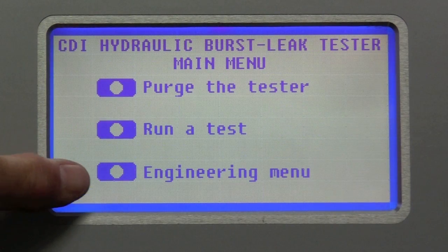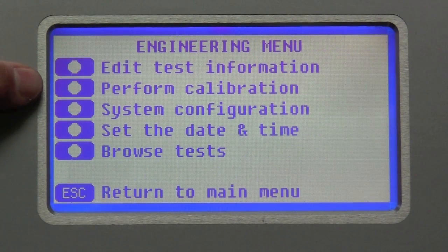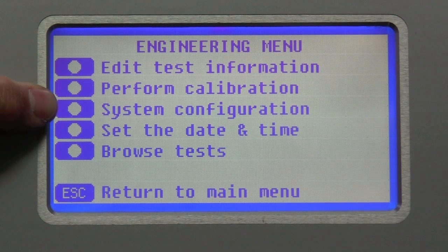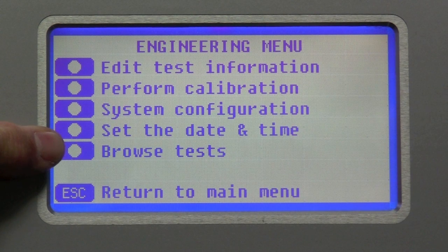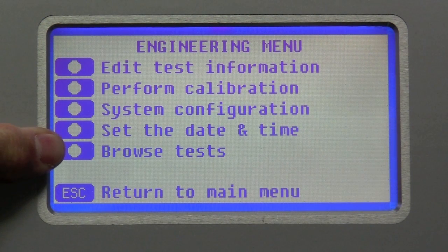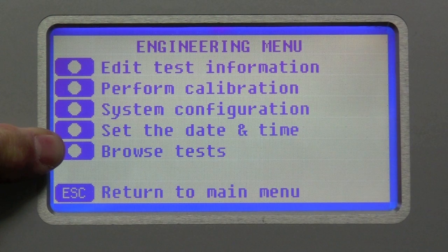And then the third choice is the engineering menu. Here you have edit test information, perform calibration, system configuration, set the date and time, and browse the tests. Here the operators can browse the tests without being able to change anything if the password has been implemented.